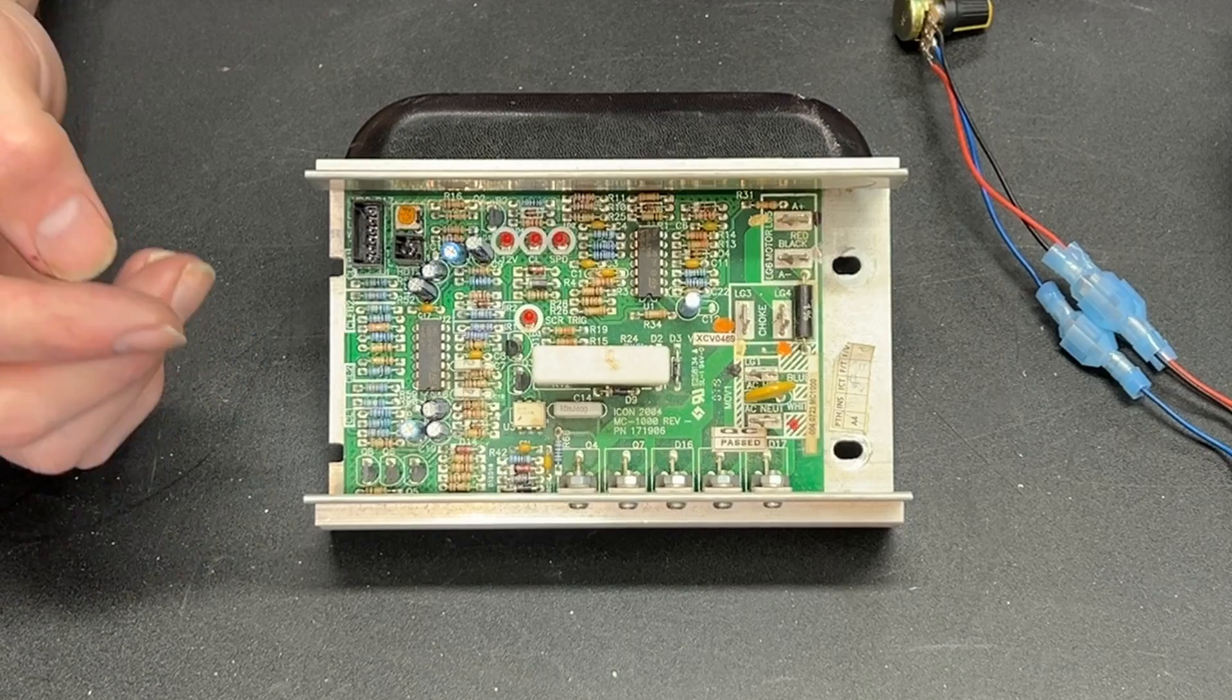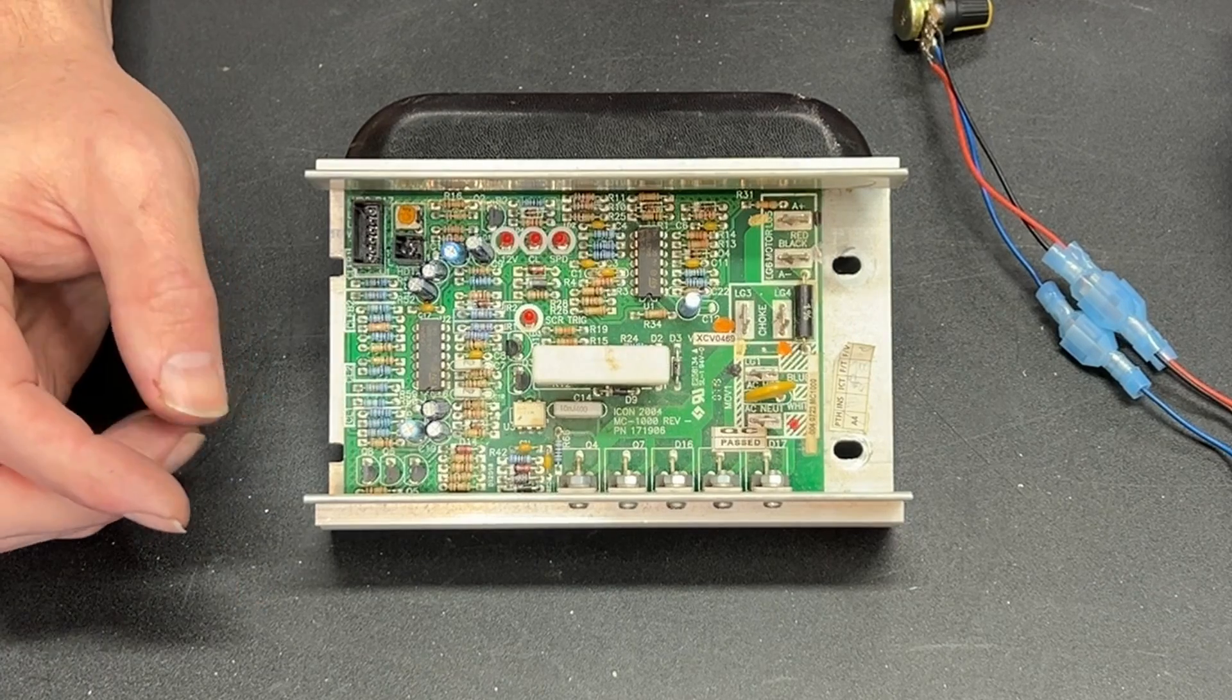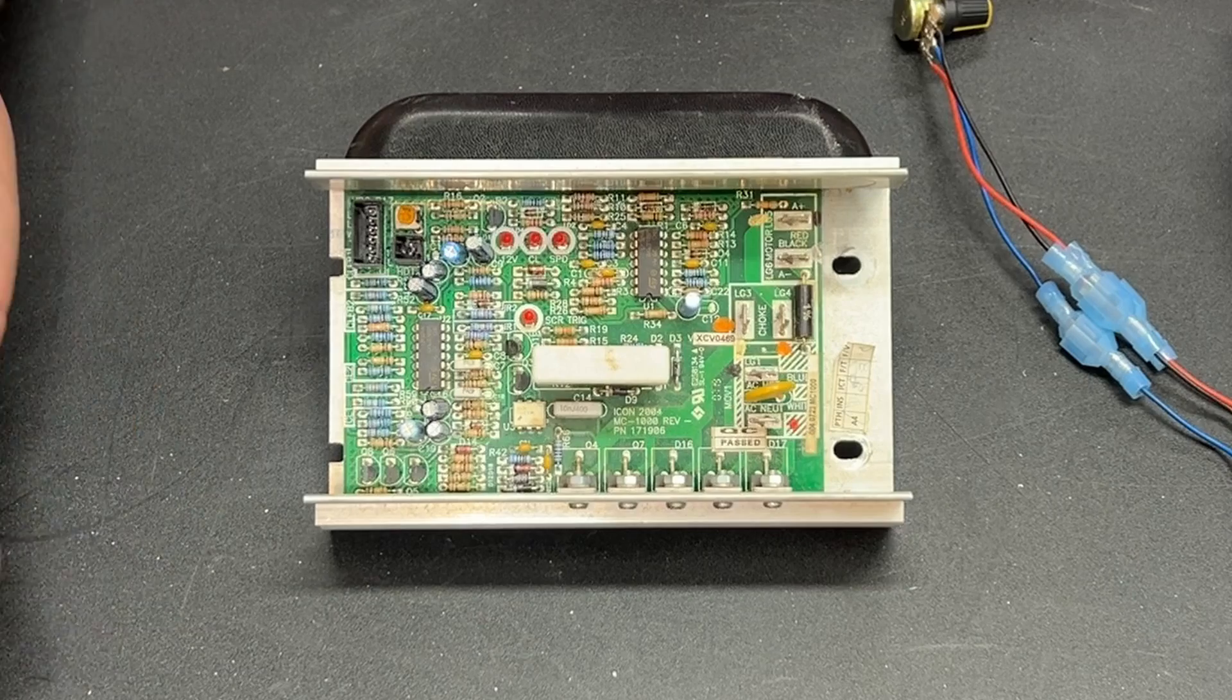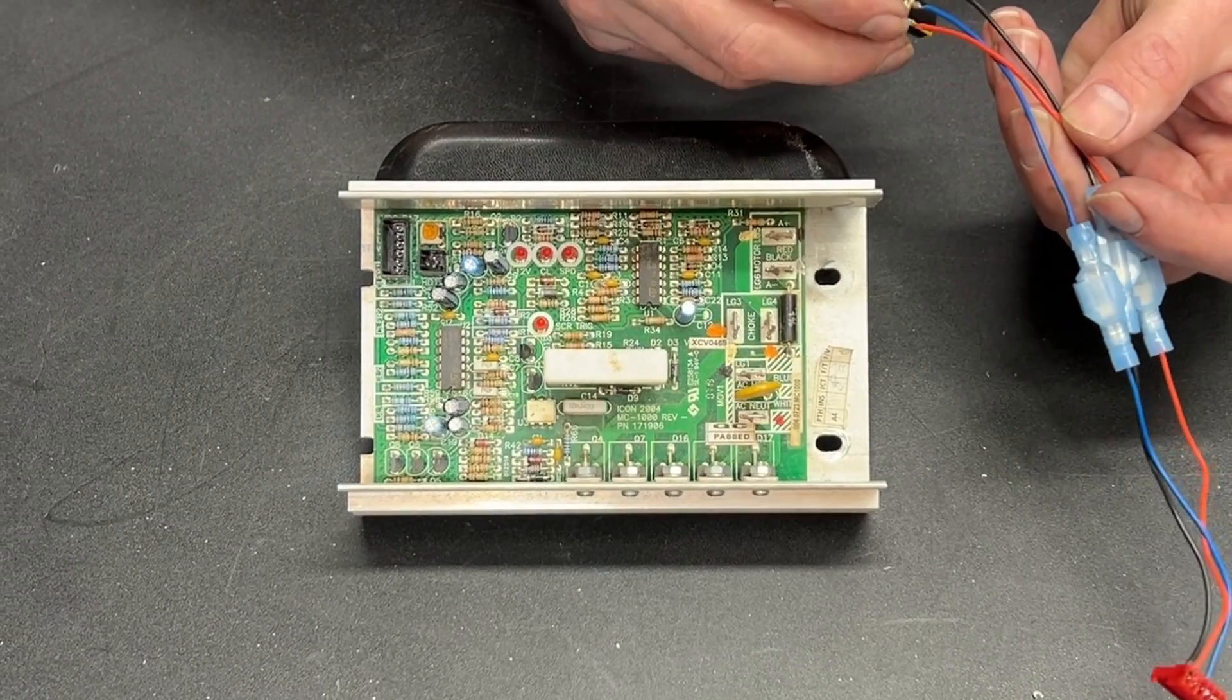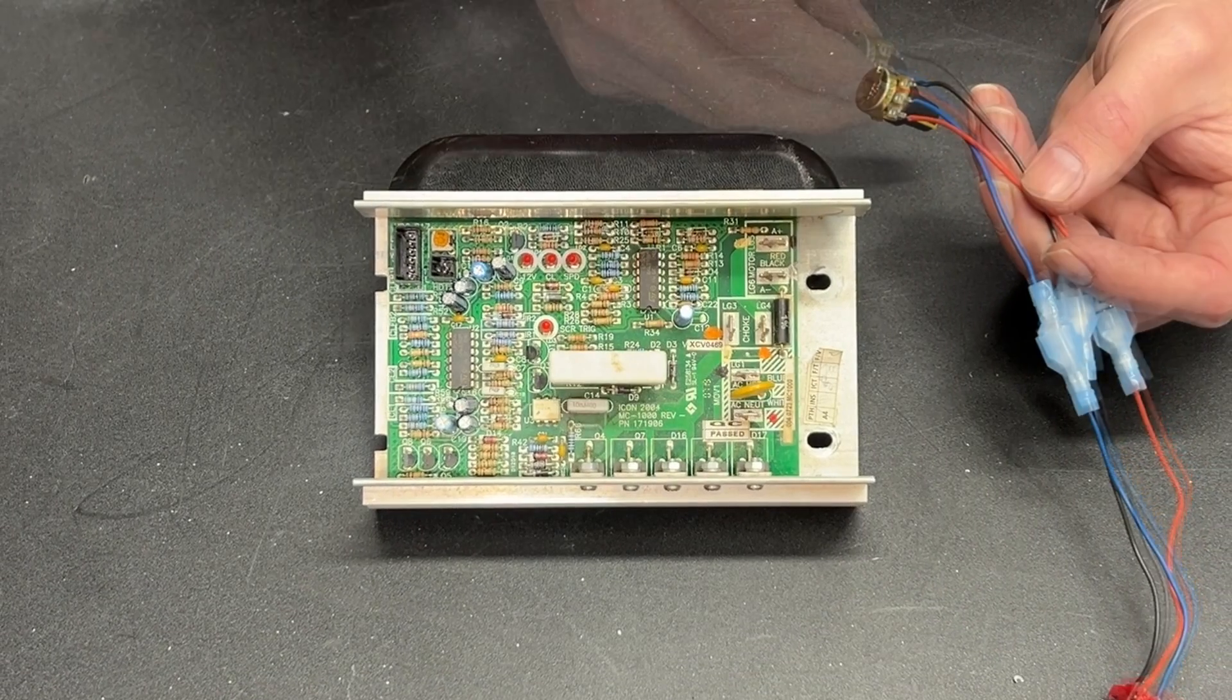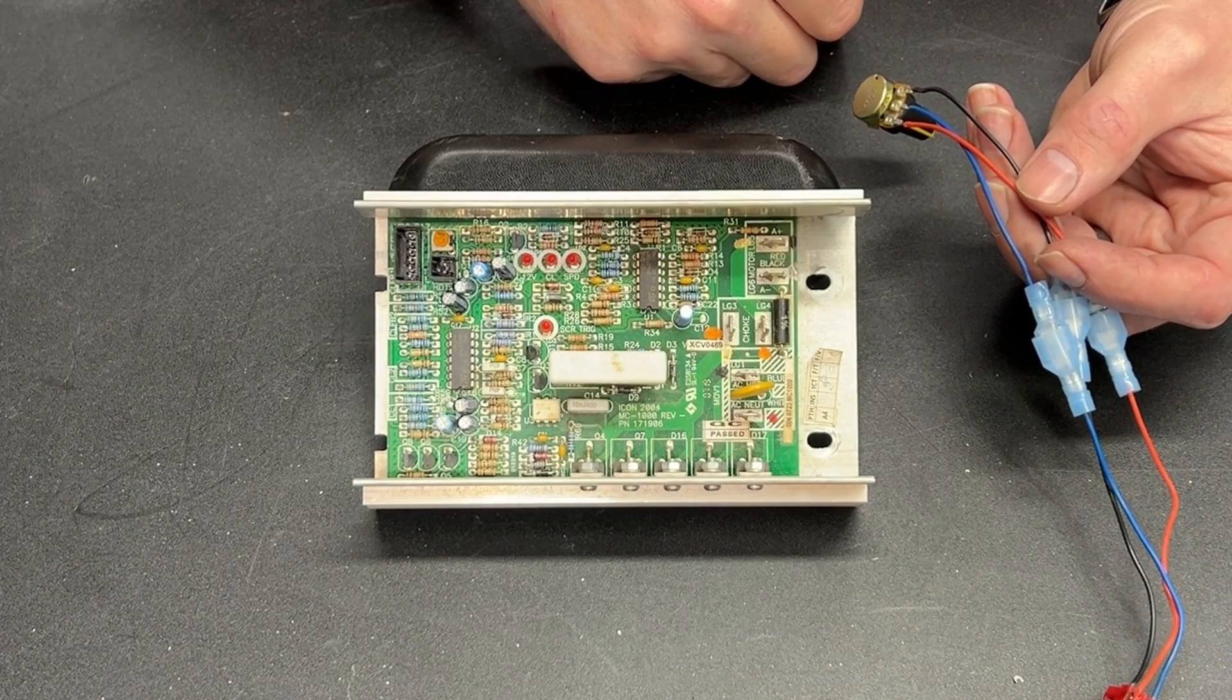The reason you do that is two potentiometers, one being significantly smaller than the other, it gives you a fine speed control. Now for the purposes of this demonstration, I'm just going to go with the 2K potentiometer. So let's go ahead and hook this up, and let's see how it works.